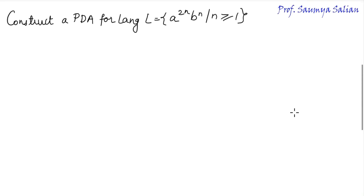Given question: construct a PDA for the language L such that a to the power 2n and b to the power n, where n is greater than or equal to 1. So let's begin.